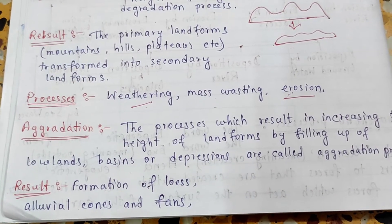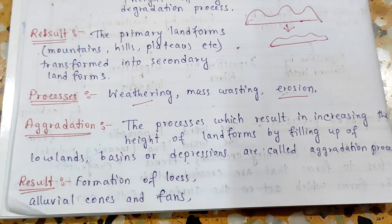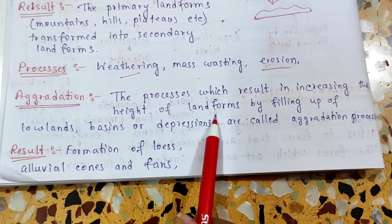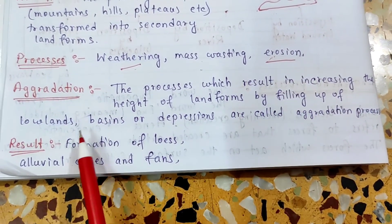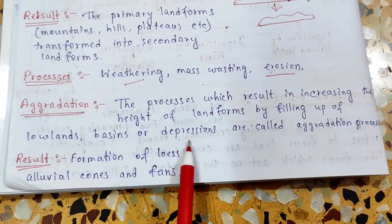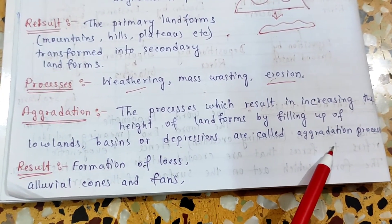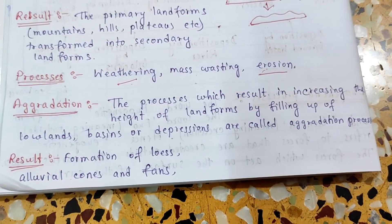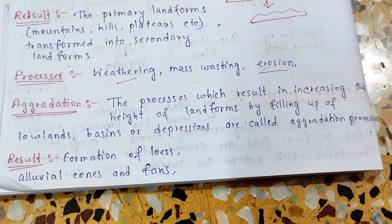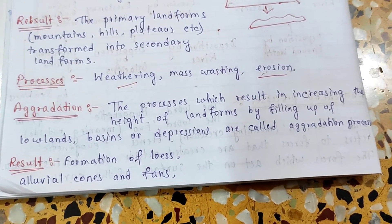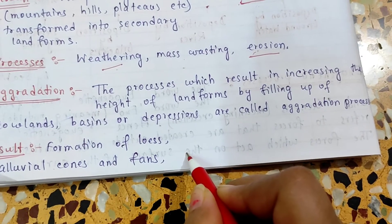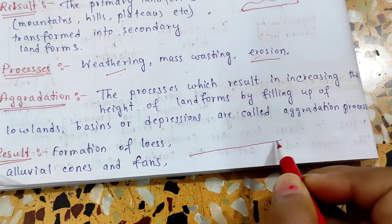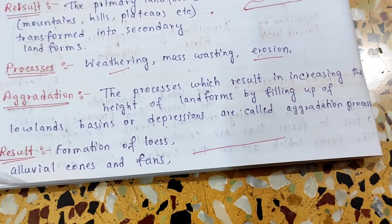The processes which result in increasing the height of landforms by filling up of lowlands, basins or depressions are called aggradation processes. It is the process by which land surfaces build up by deposition or accumulation of debris or rock fragments like clay, sand, alluvium, etc., derived from transportation and denudation.